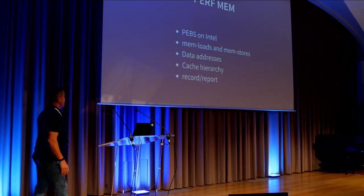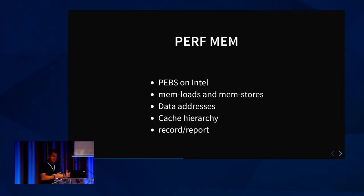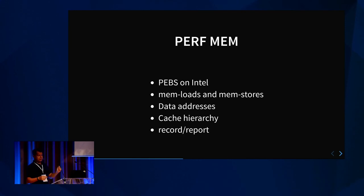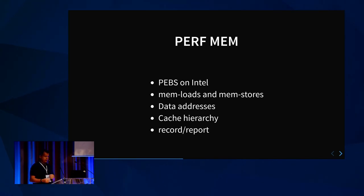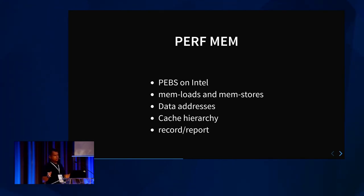Perf mem was the first one. On Intel we have a feature called PEBS, and with PEBS you have a way to tell the processor to sample from time to time. You're not going to look at all the accesses to memory — reads, writes, loads and stores. It will, from time to time, check: is this access taking more than that many CPU cycles? If it is, take a sample, get lots of information about this event — the memory being accessed, the IP, the instruction pointer, registers, lots of things.